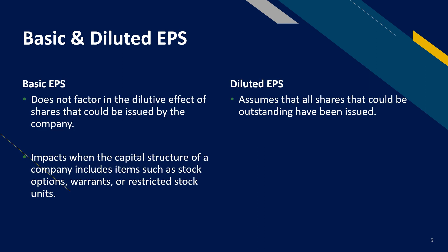The formula we just learned is the basic EPS, which does not factor in the dilutive effect of shares that could be issued by the company. When the capital structure of a company includes items such as stock options, warrants, or restricted stock units, an investor runs the risk of assuming that none of these options will be exercised. However, if exercised, the number of shares will increase and the EPS will fall. The diluted EPS assumes that all the shares that could be outstanding have been issued, to give investors a worst-case scenario in the case of option exercise.